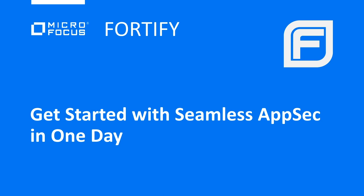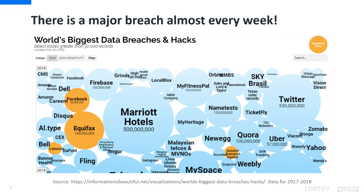We have a couple disclaimers. First, building an AppSec program is a long process and can be measured in years, and it varies by organization, so we're simplifying the story. We'll start with this scary breach slide. This great visualization by Information is Beautiful shows the frequency and scale of major breaches around the world. Basically, there's a major breach every week. These threats are scary, but we know that organizations are motivated by actual breaches and audit and compliance requirements.